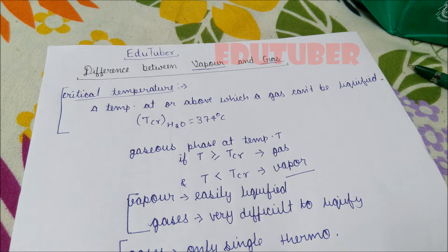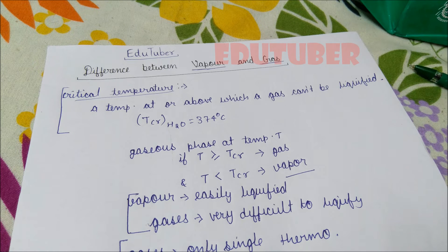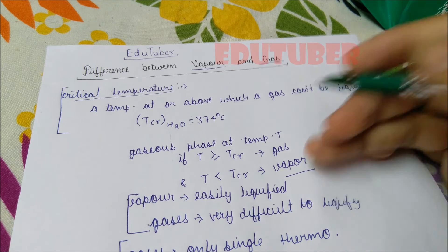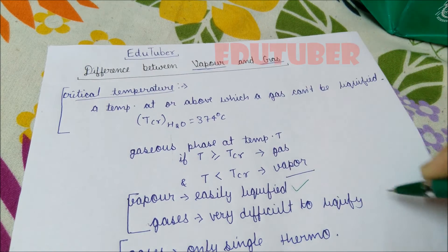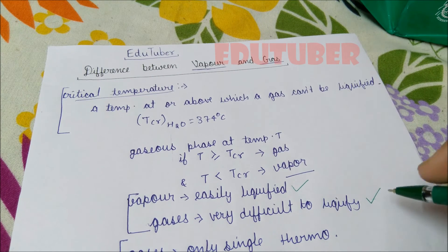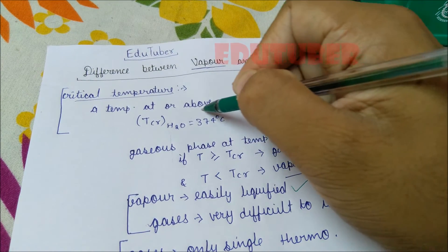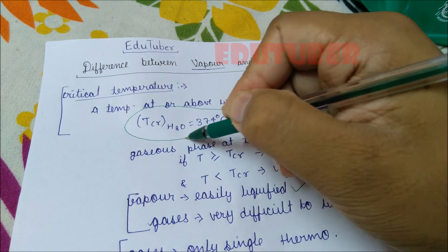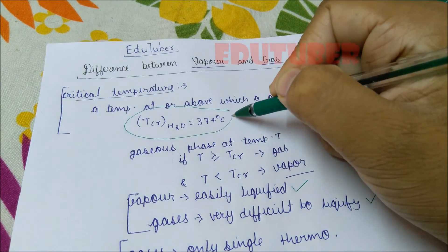So we can say: above critical temperature, the gaseous phase of matter is called gas, and below critical temperature, the gaseous phase of matter is called vapor. To summarize: vapor is an easily liquefiable form of gaseous matter, and gas is very difficult to liquefy. You should also remember the critical temperature of water — don't forget it.